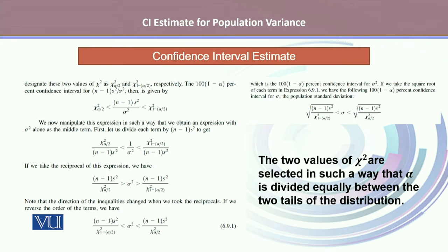The confidence interval estimate for the population variance can be obtained as (n-1)s²/σ² and taking the lower limit to be chi-square α/2 and upper chi-square 1-α/2. Solving it for sigma squared, the variance, the expression can be given in equation 6.9.1, which is the 100(1-α)% confidence interval for σ².